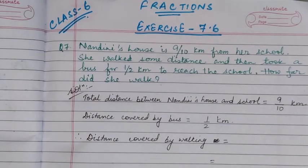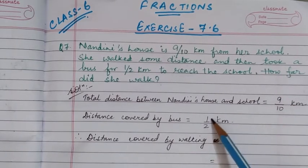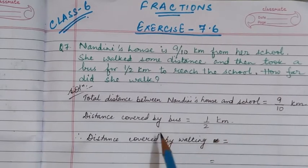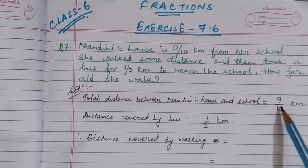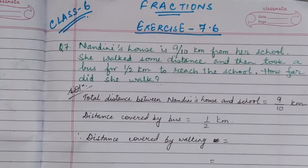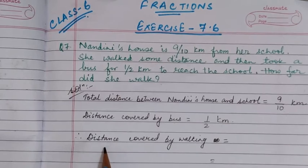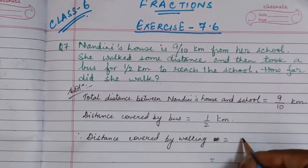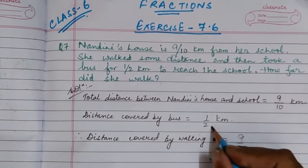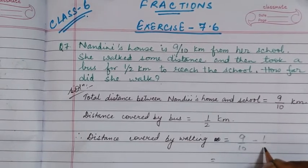The total distance was 9/10, and out of 9/10, 1/2 has been covered by bus. So the rest of the distance is covered by walking. If we take the difference between these two fractions we will get the distance covered by walking. So you will write: distance covered by walking is equal to 9/10 minus 1/2.